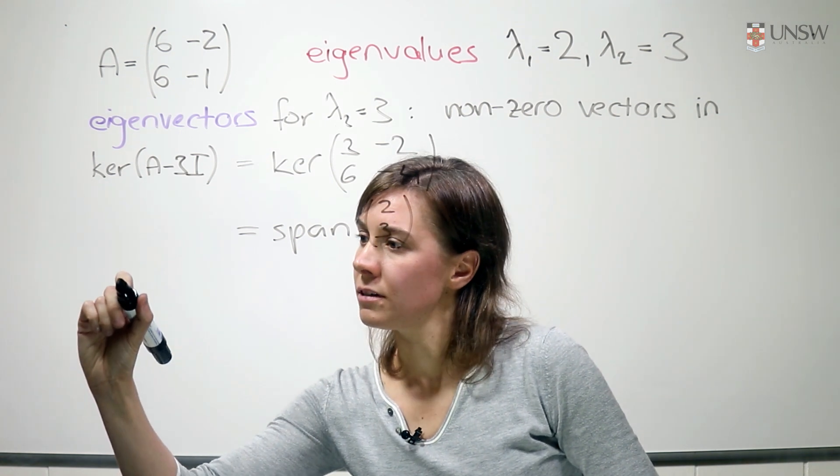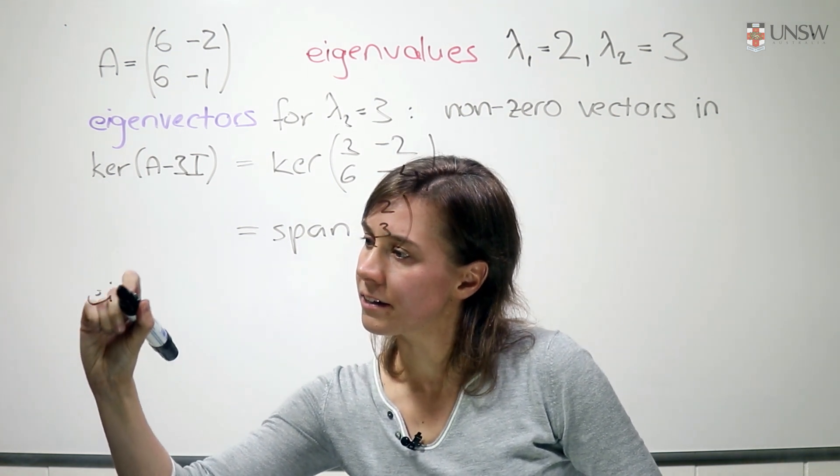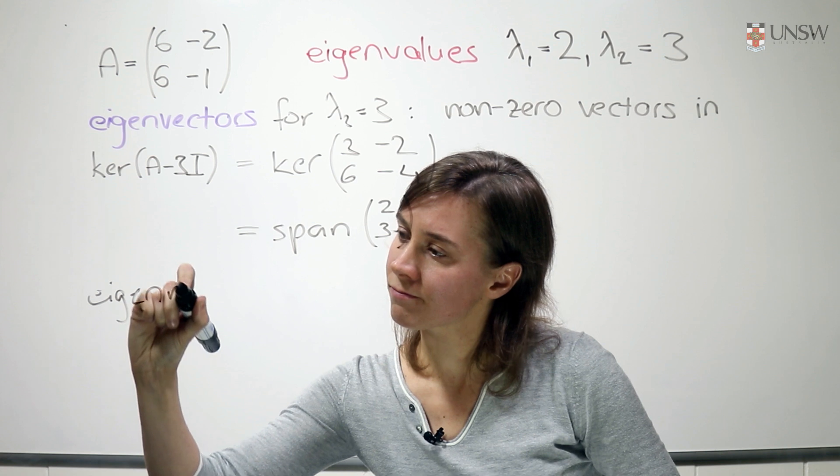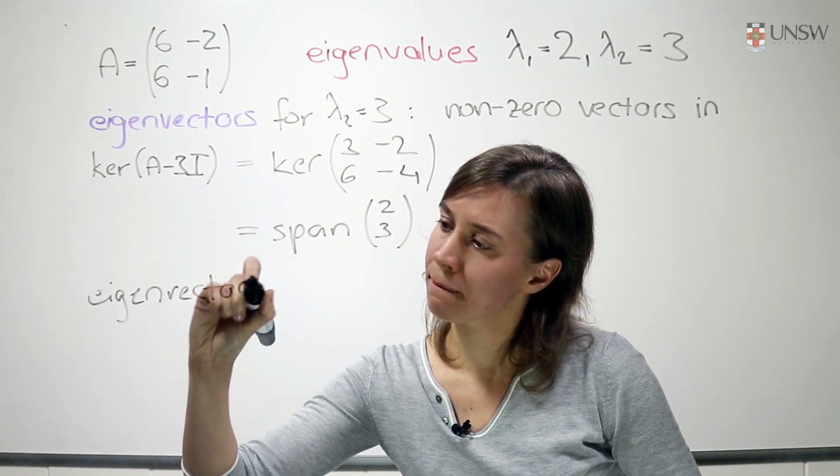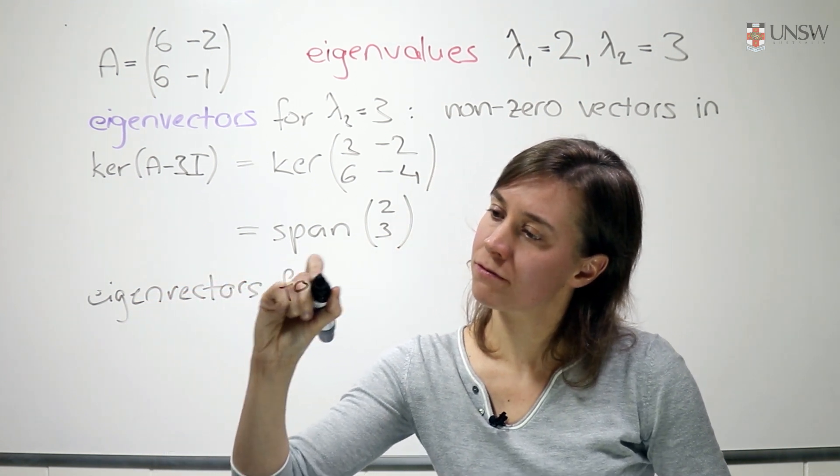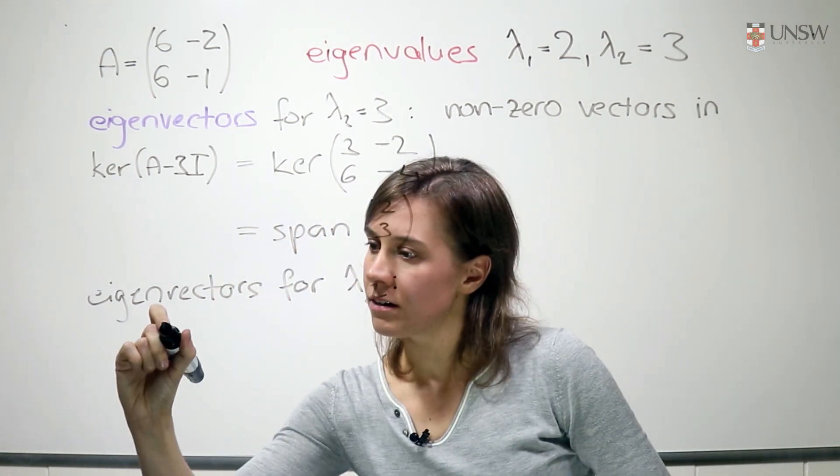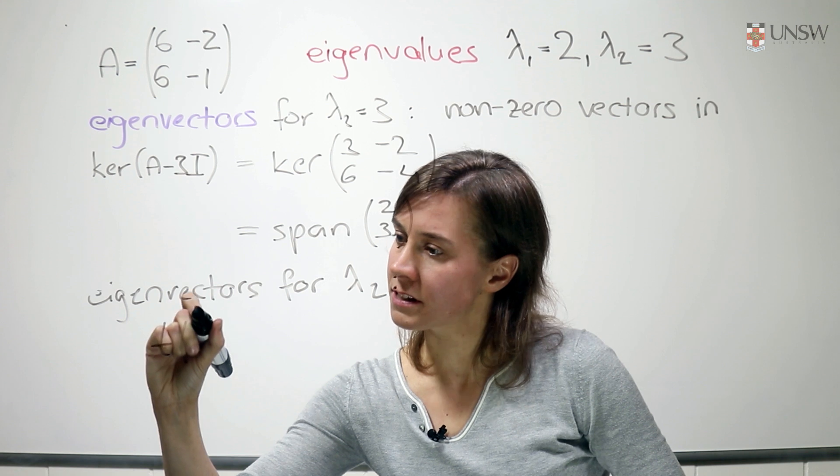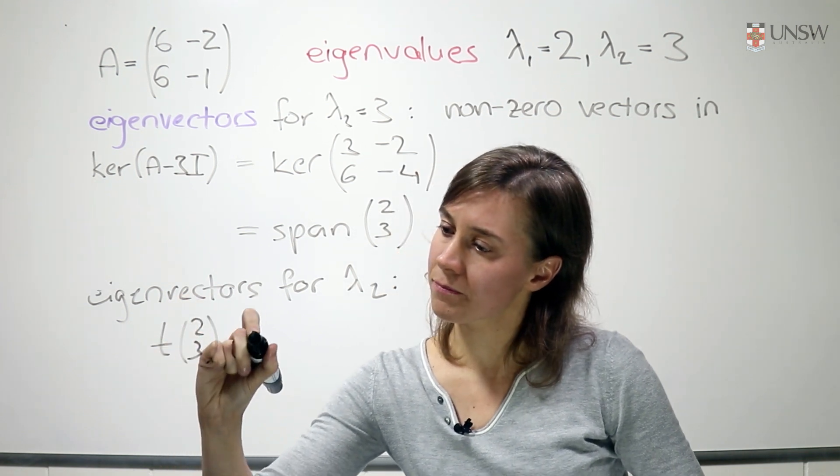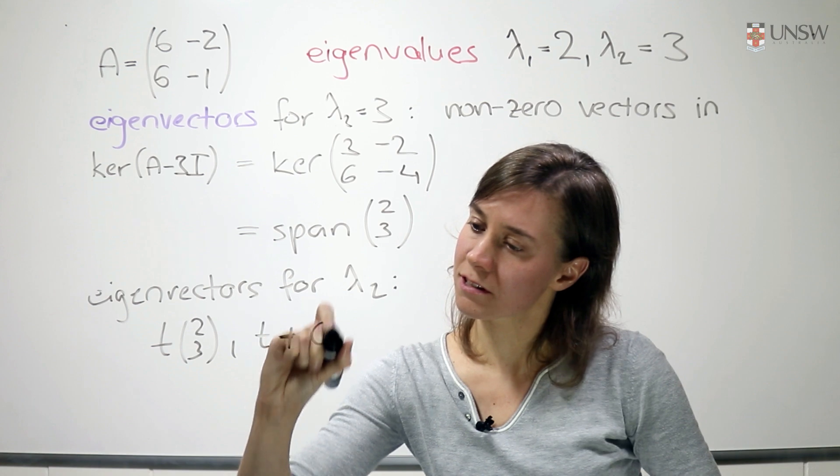And therefore, we know that our eigenvectors for lambda 2 will be all the multiples t times 2, 3, where t is not 0.